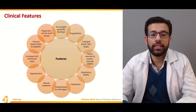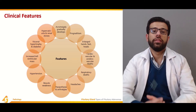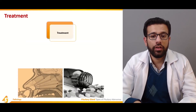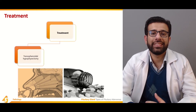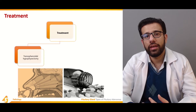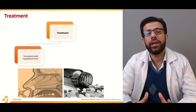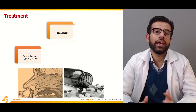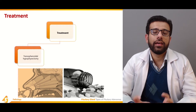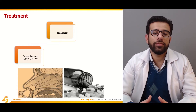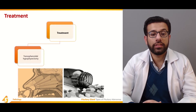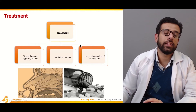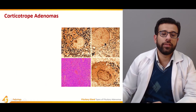Further features include visceral hypertrophy, diabetes, hypercalciuria, and renal stones. Long-standing diabetes can lead to chronic kidney disease. Treatment is typically surgical, radiation therapy, or chemotherapy depending on the stage, size, shape, and nature of the tumor. Options include transsphenoidal hypophysectomy, radiation therapy, and long-acting somatostatin analogues for conservative management.